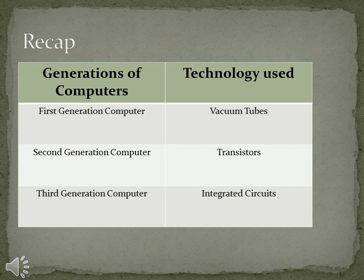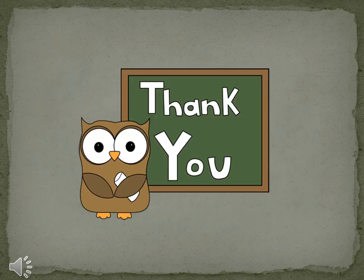Let's quickly recap the concepts we have covered. We have read about three generations of computers: the first, second, and third. What you need to remember is which technology was used in each generation. The technology used in the first generation computers was vacuum tubes. The technology used in the second generation computers was transistors. And the technology of integrated circuits was used in the third generation of computers. I hope that you have understood the concept very well. Thank you so much.